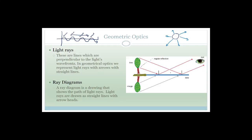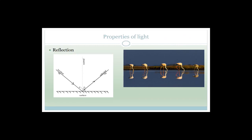Depending on how far or close you get to it, this image could be bigger than, smaller than, or identical to the regular picture you would normally see. All of those are ray diagrams.